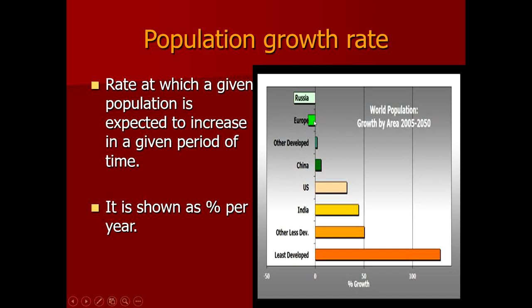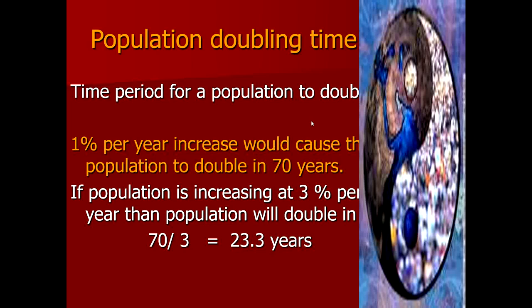In countries where the population is going into a negative trend, the growth rate is expressed as a negative percentage per year. Population doubling time is the time period required by a population to double itself. If a population is increasing at a rate of 1%, it will take 70 years to double. To calculate population doubling time, divide 70 by the growth rate.